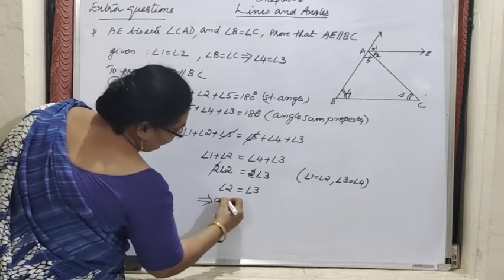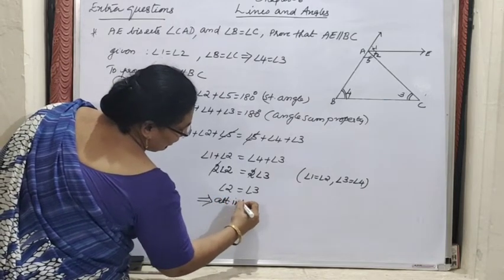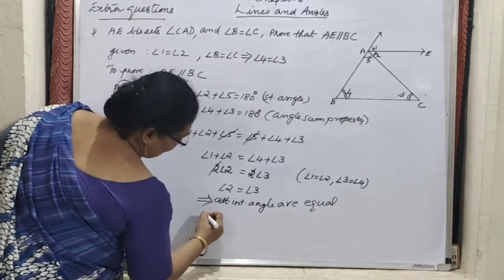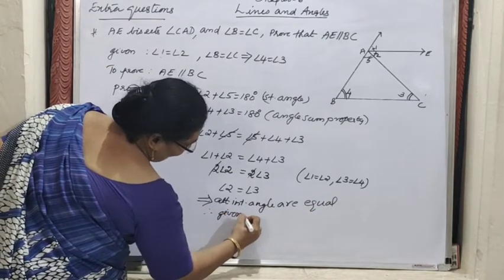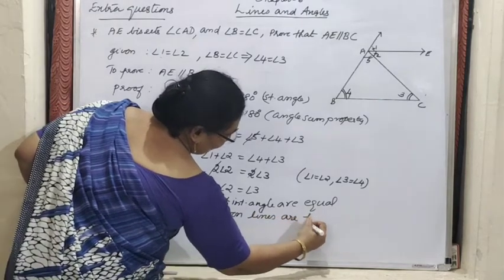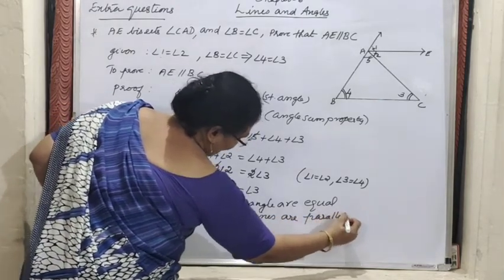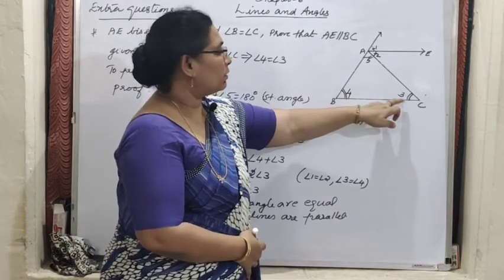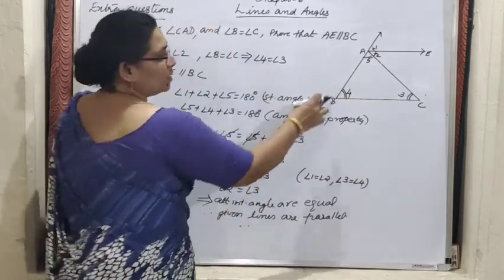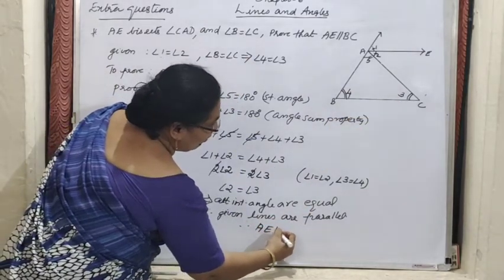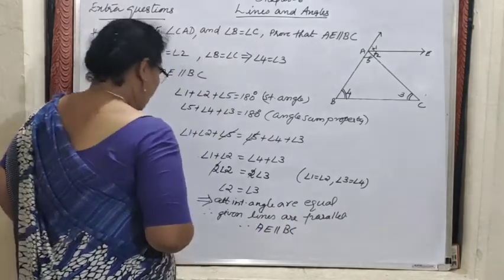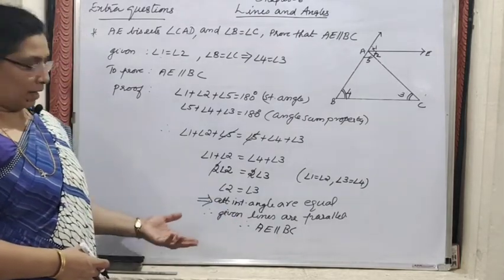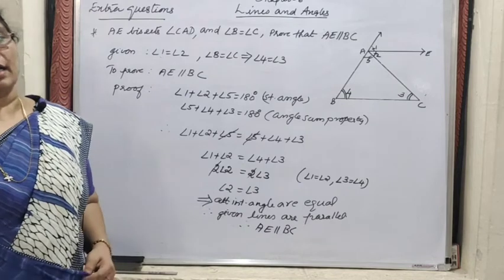Angle 2 equals angle 3 — these are alternate interior angles being equal. So the given lines are parallel. Therefore AE is parallel to BC. Hence proved.